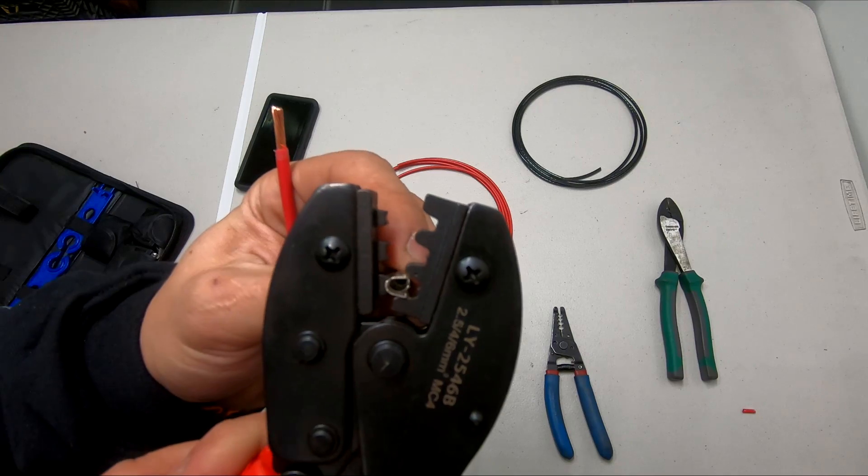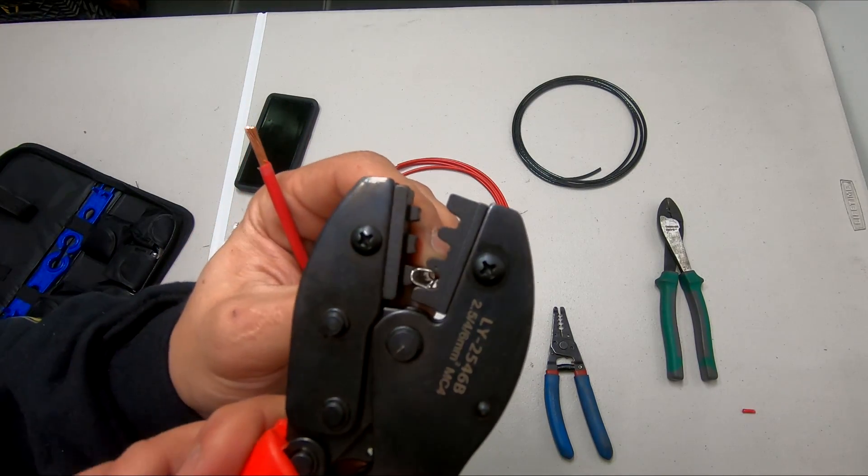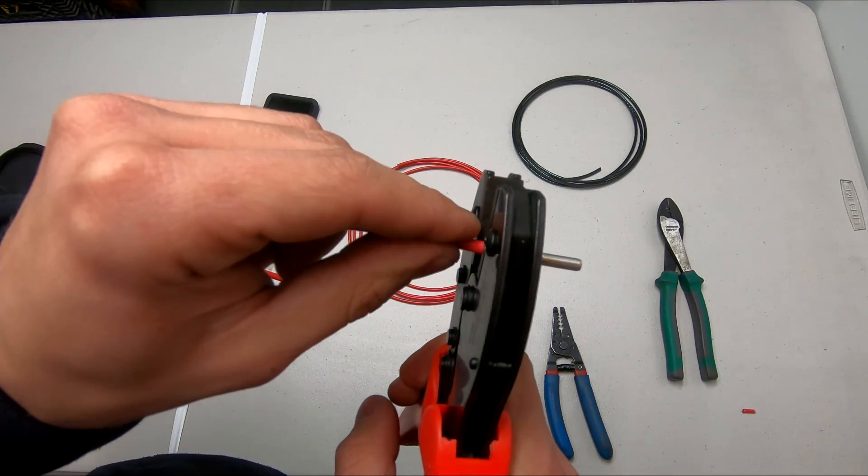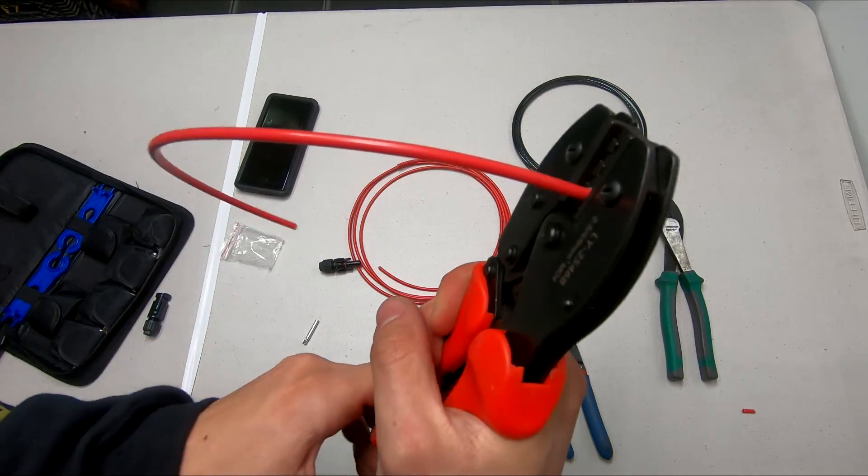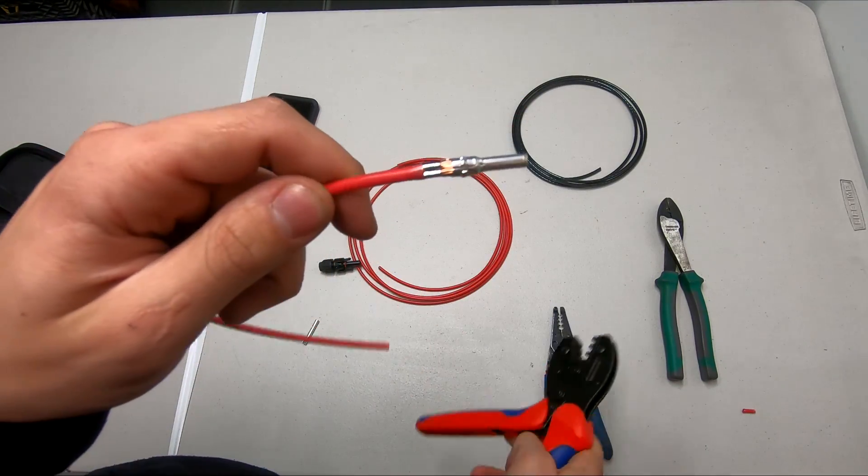When you're putting these ferrules in the tool you want to put the open end toward the top, like so, and you can go ahead and start squeezing it a little bit. Then you can stick the wire in at that point and squeeze it all the way until it closes.